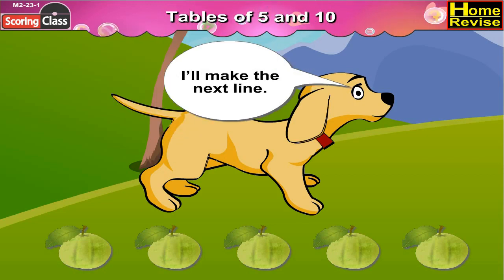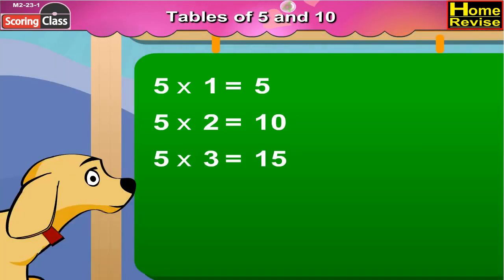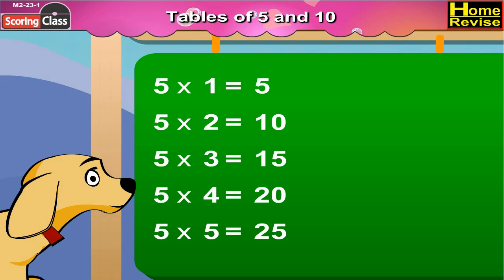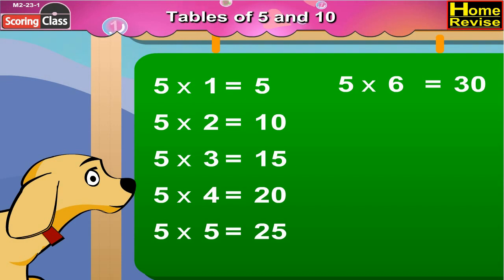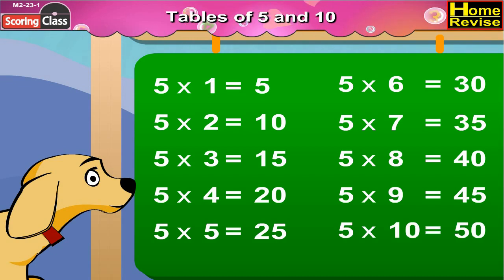'I'll make the next line: 16, 17, 18, 19, 20.' So kids, five multiply by four is equal to twenty. Five fours are twenty. And further: five fives are twenty-five, five sixes are thirty, five sevens are thirty-five, five eights are forty, five nines are forty-five, five tens are fifty.